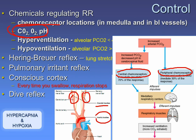Of the three monitored variables — CO2, O2, and pH — oxygen is the least important. CO2 is way more important. You must have a very large drop in oxygen for your nervous system to take notice, whereas only a small change in CO2 is needed for your nervous system to respond.